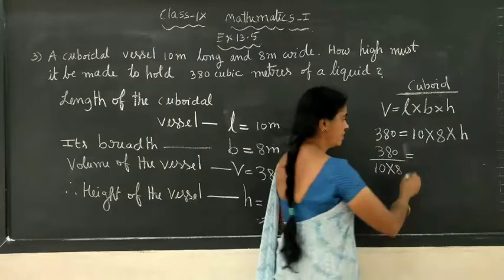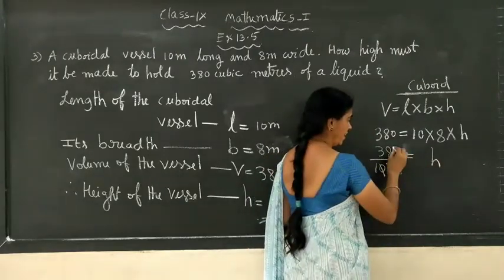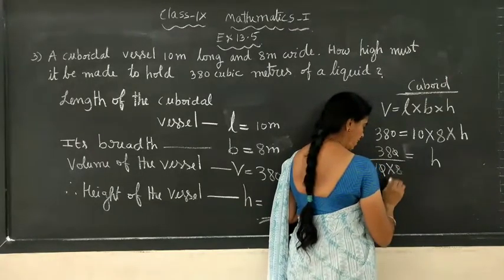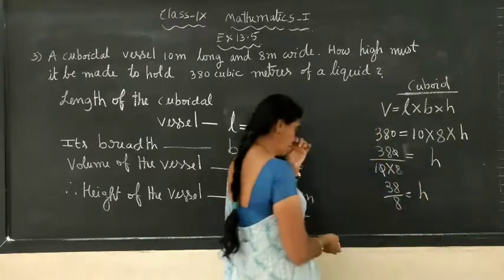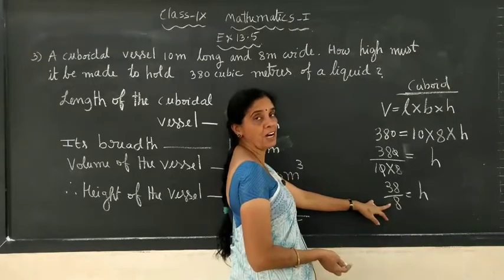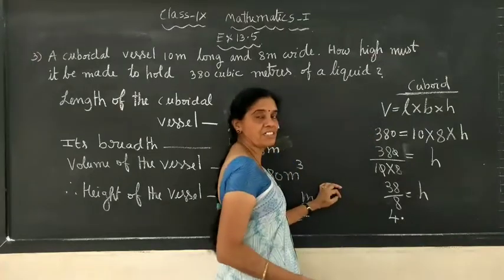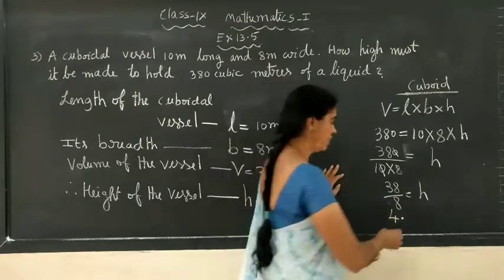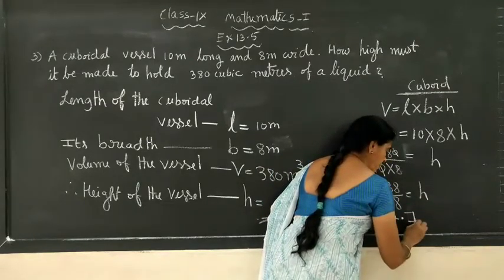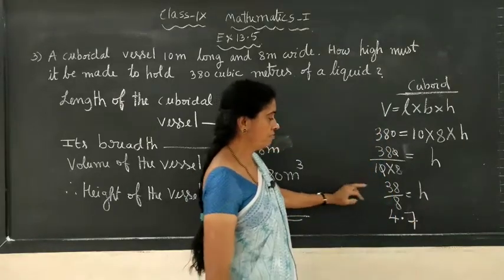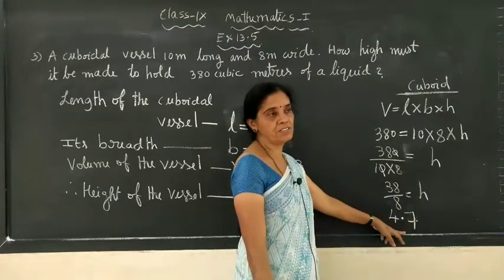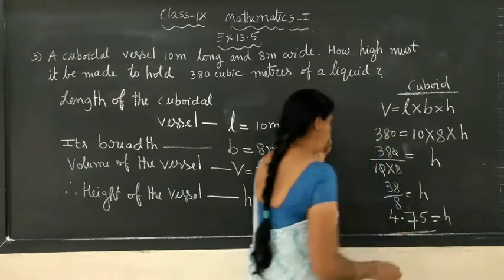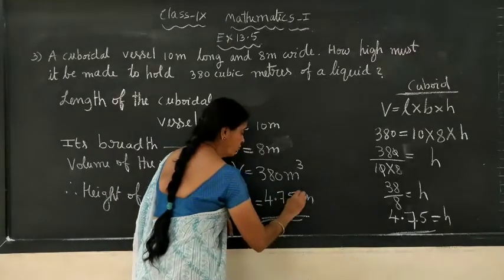On this side we will get h only. Now, 10 table: 10 ones are 10, then 38 — you can cancel the zero, then divide by 8. Or you can write 38 by 8. 8 fours are 32, so 38 minus 32 is 6 remaining. Put the decimal point, bring down 0 — so 60. 8 sevens are 56, 60 minus 56 is 4, then 40 — 8 fives are 40. So it divides to 4.75 when you divide by 8. So height is 4.75 meters.